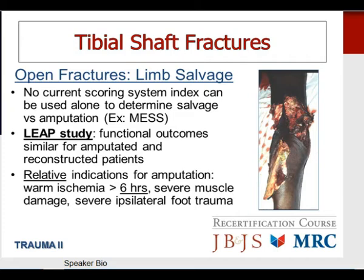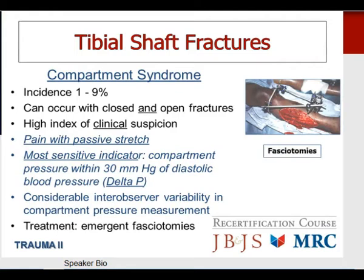Compartment syndromes are very important with tibial shaft fractures — the incidence is up to 9%, occurring with both closed and open fractures. A high index of clinical suspicion is critical based on mechanism of injury and serial examinations. Pain with passive stretch is the most sensitive clinical finding. The most sensitive absolute indicator is the delta P — the difference between intercompartmental pressure and diastolic blood pressure; if less than 30, compartment syndrome should be considered. There is considerable inter-observer variability in compartment pressure measurement, highlighting that this is a clinical diagnosis. Once diagnosed or suspected, the only treatment is emergent fasciotomies.